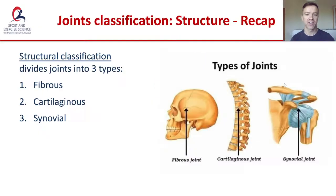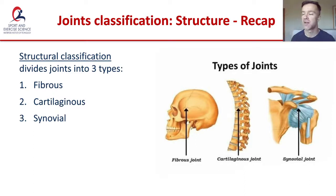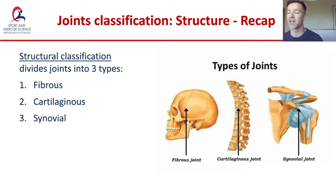Before we do that, I just want to do a quick recap on joint classification. Joints can be classified in different ways. We focused on structural classification, and according to that there are three different types of joints: fibrous joints, cartilaginous joints, and synovial joints. Fibrous joints and cartilaginous joints both involve two or more bones joined by tough connective tissue. Fibrous joints are essentially fixed with no movement permissible, while cartilaginous joints allow limited movement.